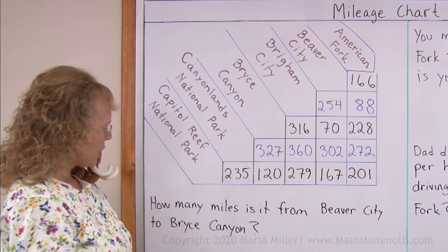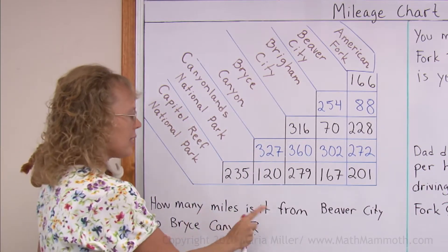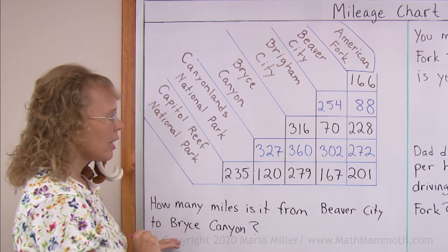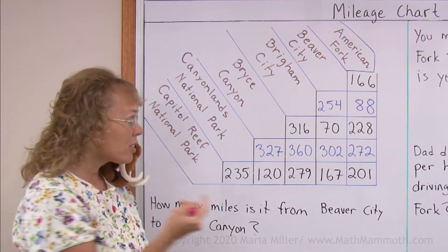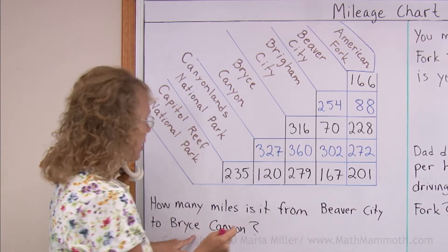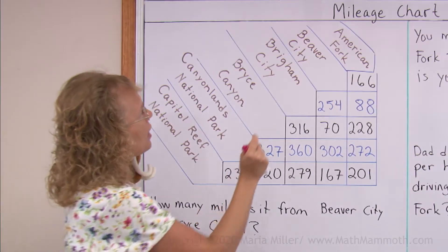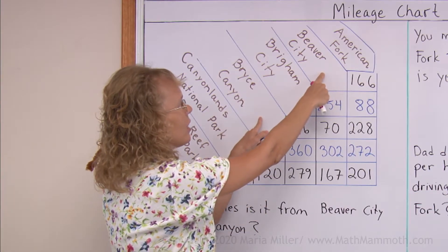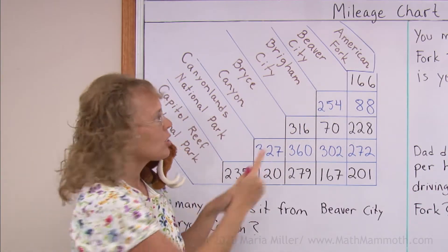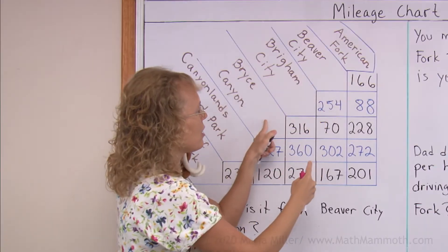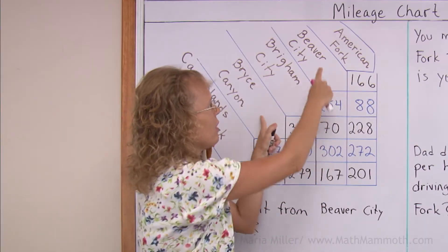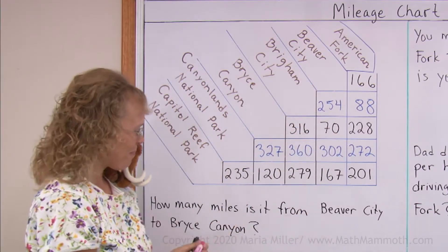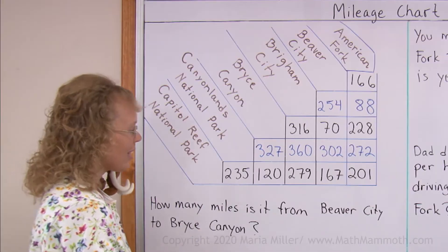Let's go through these two now. How many miles is it from Beaver City to Bryce Canyon? I need to find Beaver City and Bryce Canyon. Beaver City here, Bryce Canyon here. I go down from here, then this way from here, and I will meet here at 70. So 70 miles.